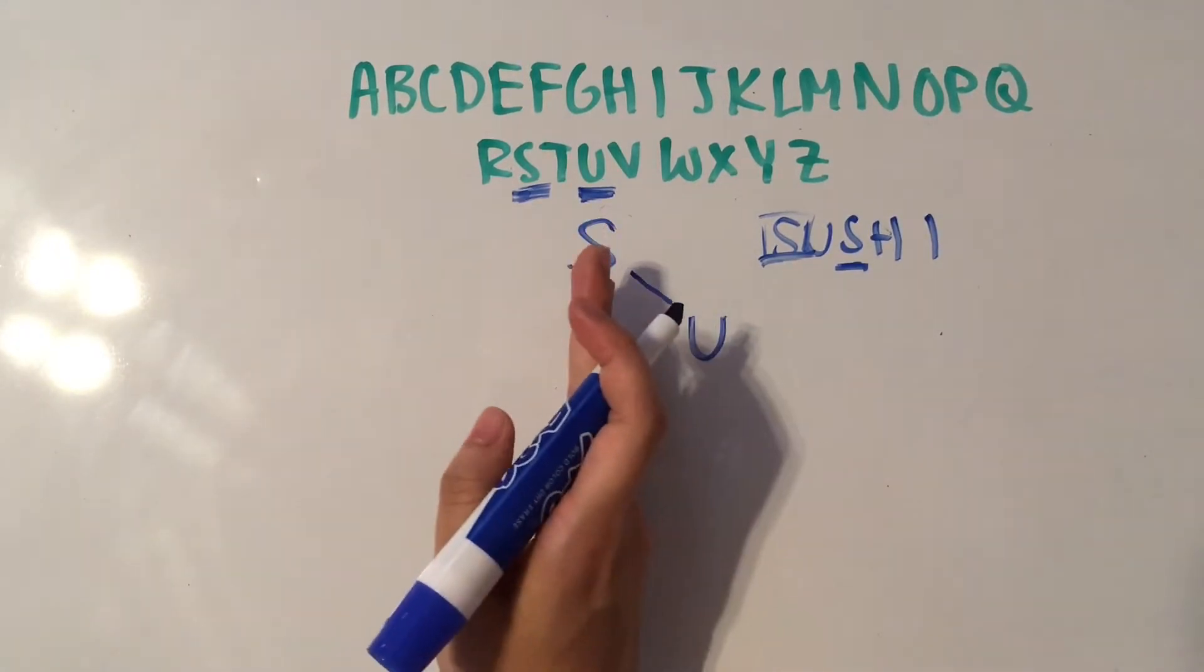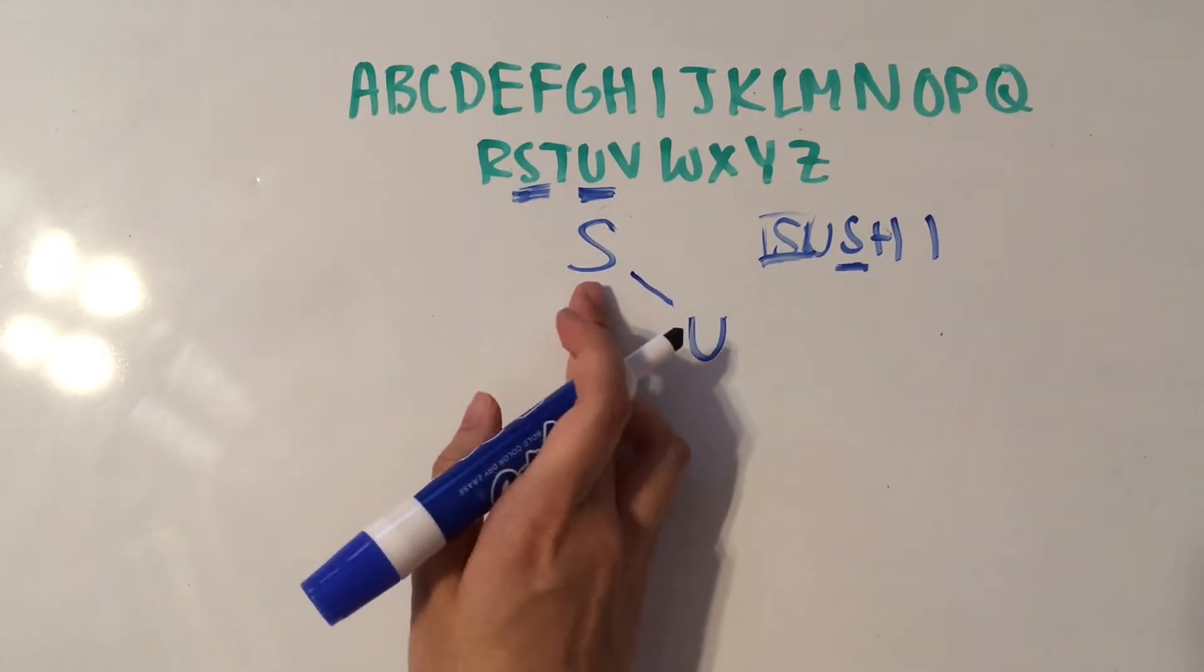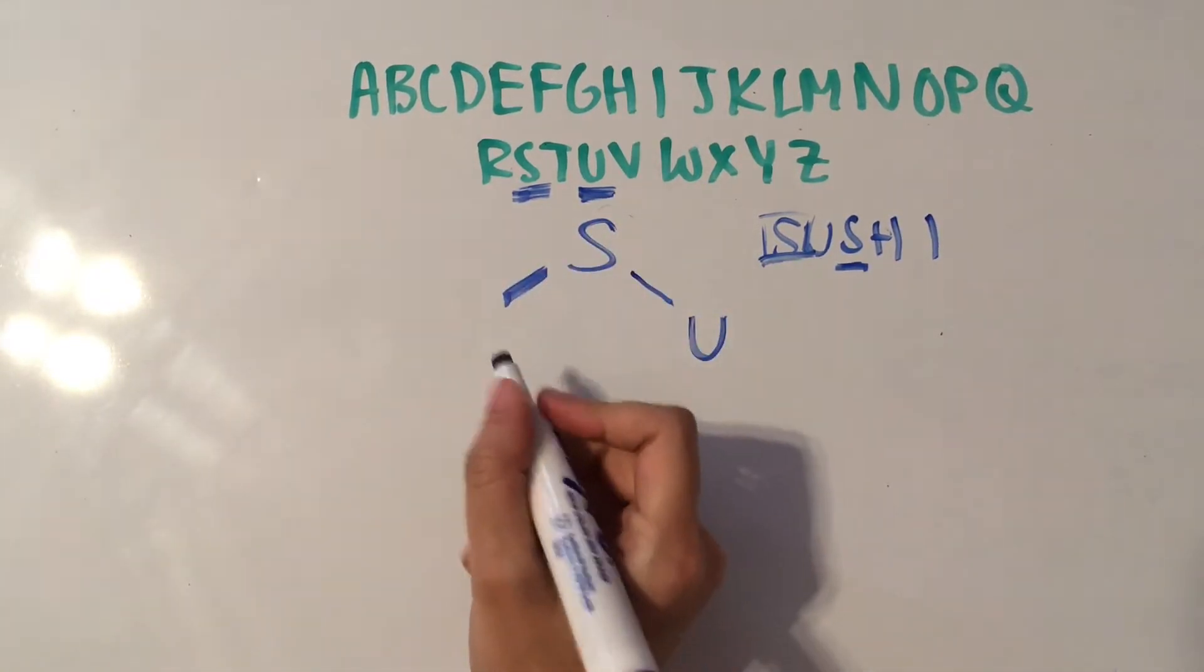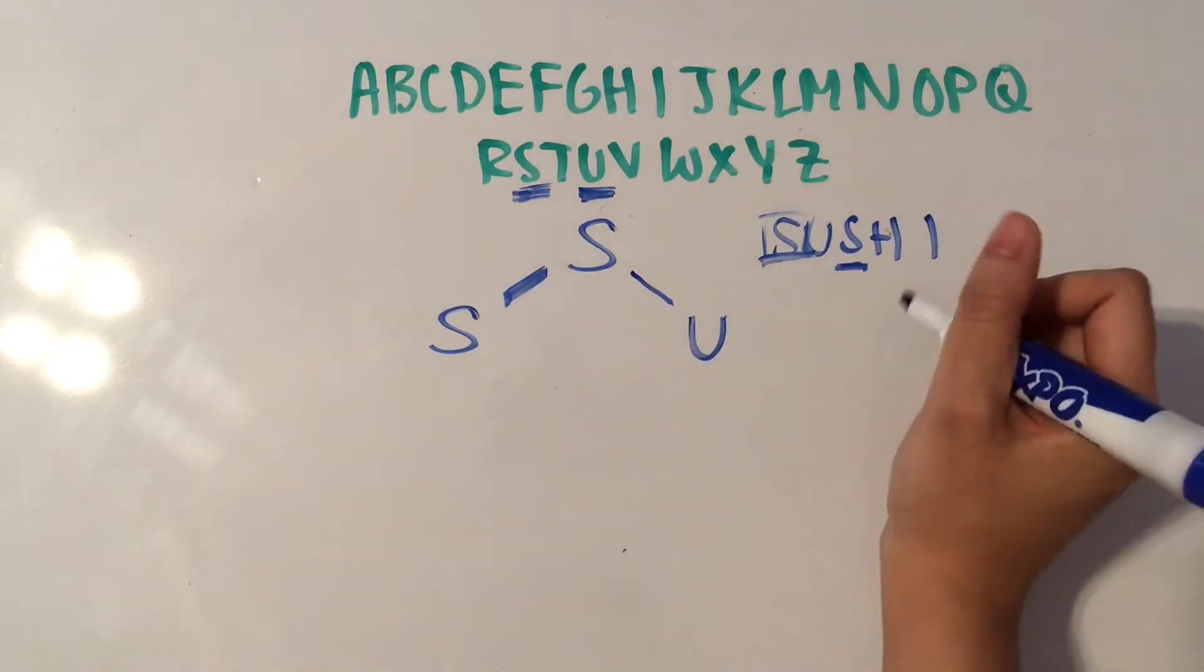So if it's before or the same letter as the first letter, then you're going to put it to the left. So we're going to draw a branch to the left and put in another S.